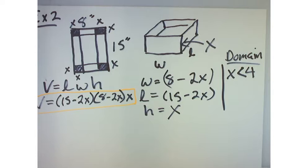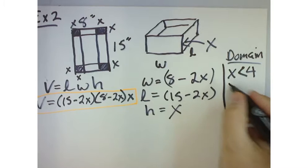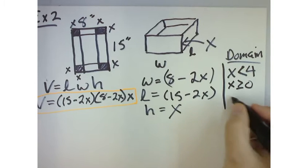Why did I say that the domain x has to be less than 4? Well, wait. Can we have a negative value? No. So, x has to be greater than or equal to 0. We could write it like this.